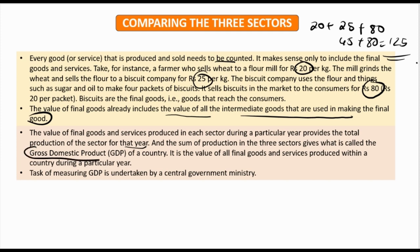The sum of production in each sector gives the Gross Domestic Product. GDP is the value of all final goods and services produced within a country during a particular year. The task of measuring GDP is done by the central government ministry, which adds up the values of all products formed across all sectors to arrive at the Gross Domestic Product.